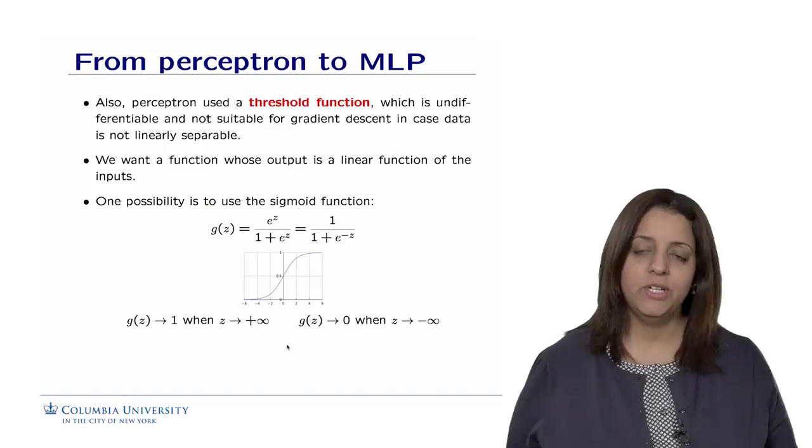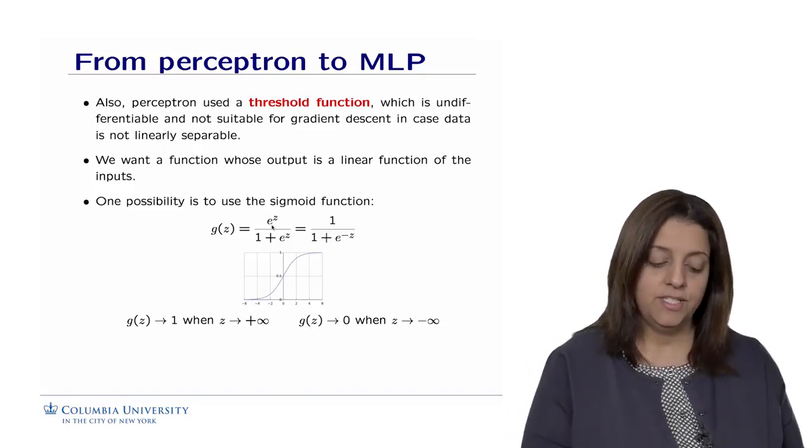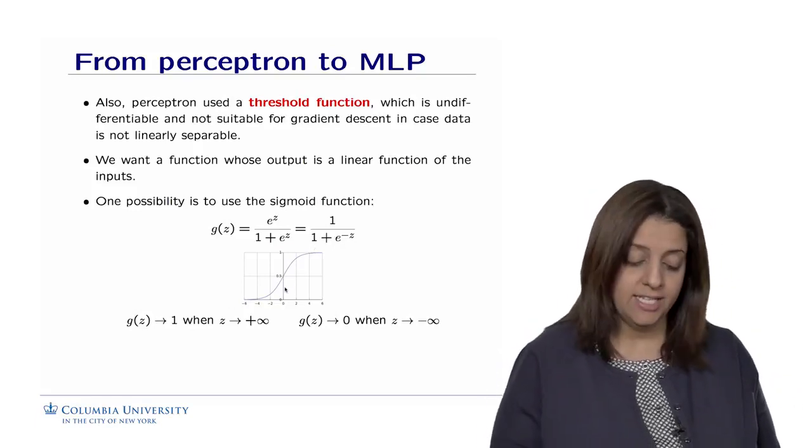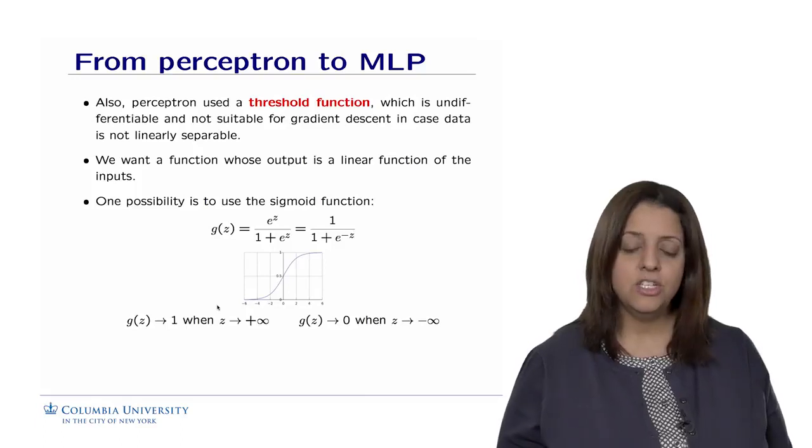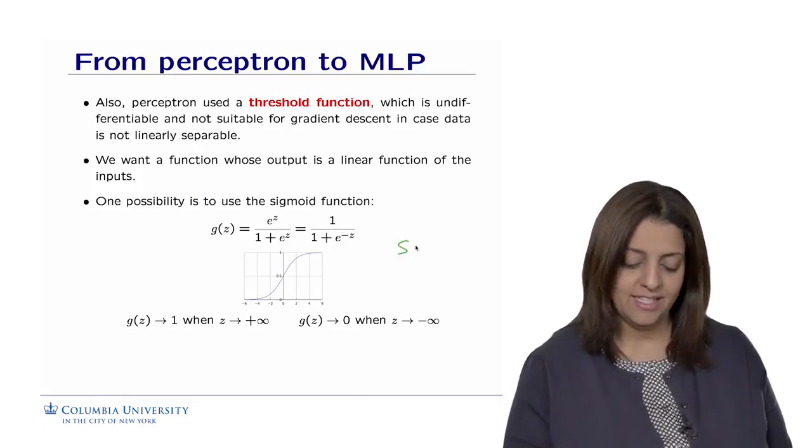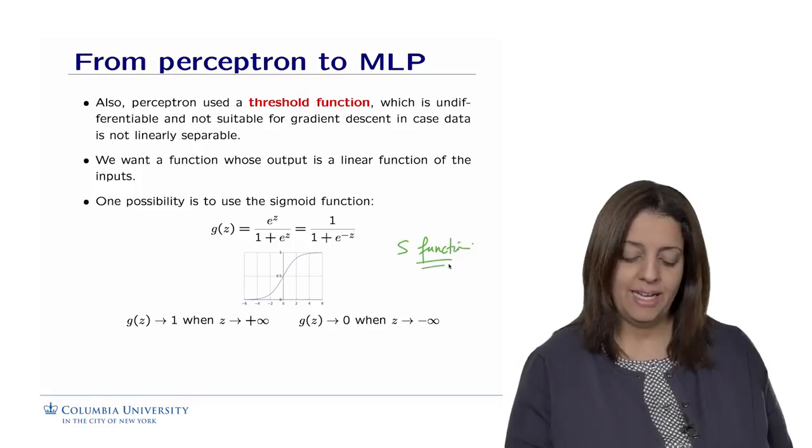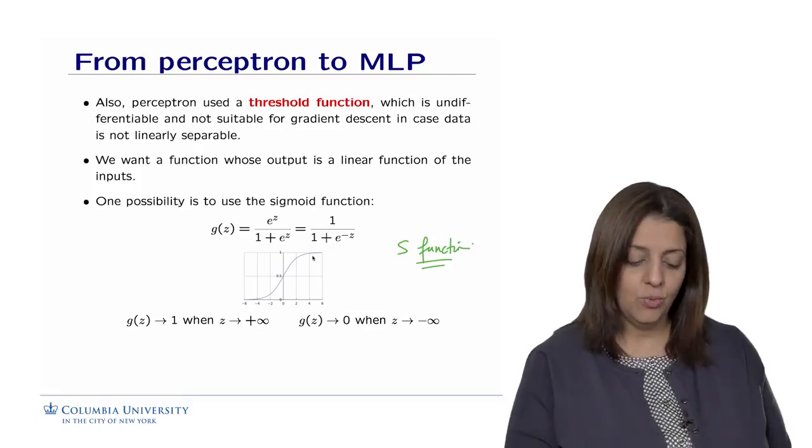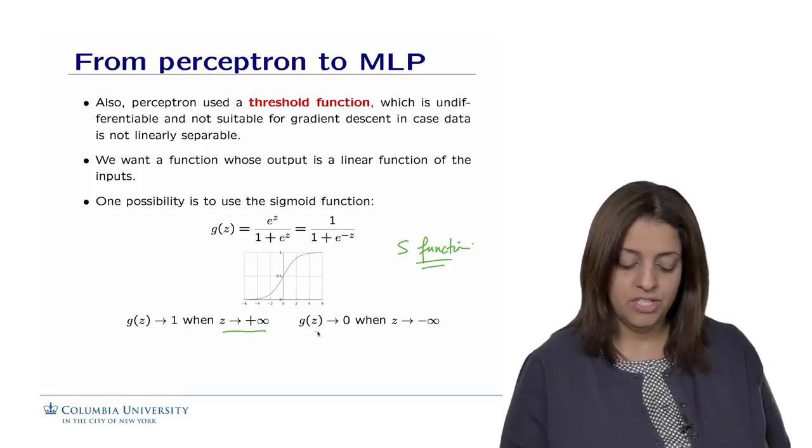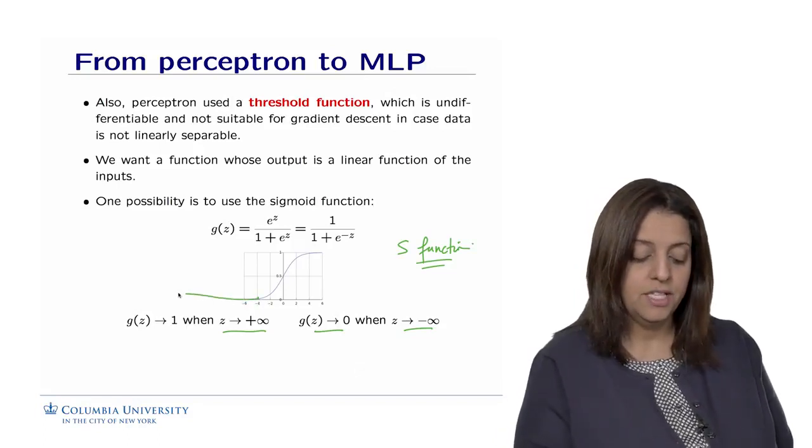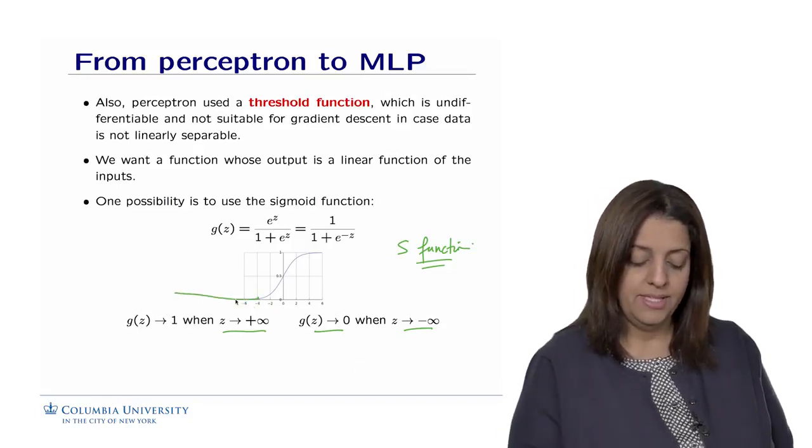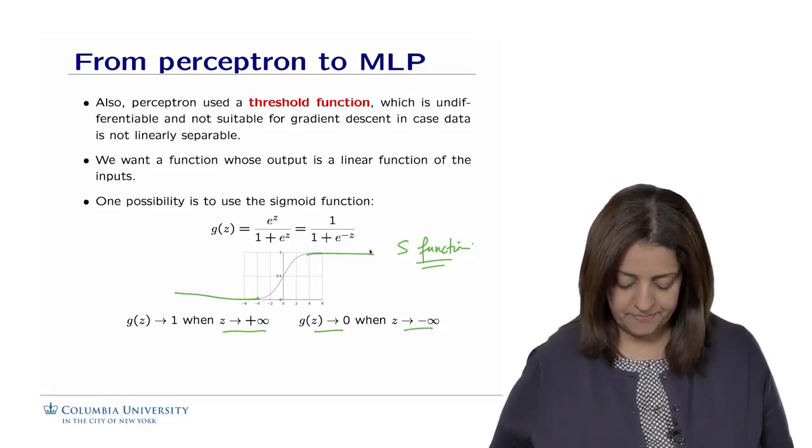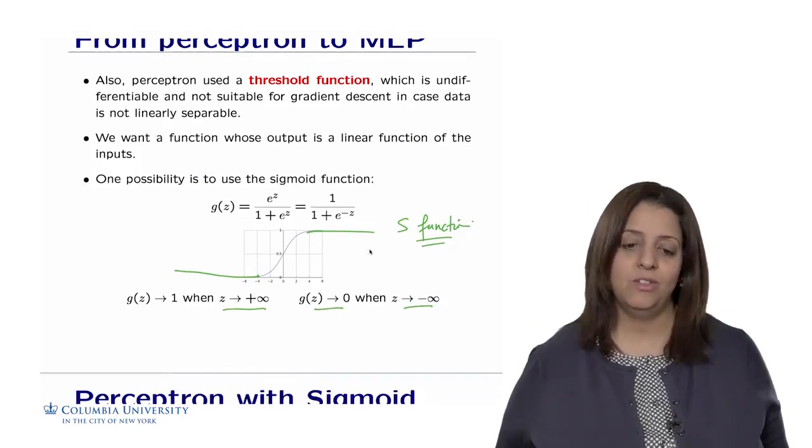One possibility is to use what we call the sigmoid function, that is g of z equals e^z divided by 1 plus e^z, or equivalently 1 divided by 1 plus e^(-z). This function has this shape here, also called the S function. It's shaped like an S. And this function has the interesting property that it will be converging to 1 whenever z goes to plus infinity and converging to 0 whenever z goes to minus infinity. So I'm going to use this function to show that we can represent actually the XOR function.